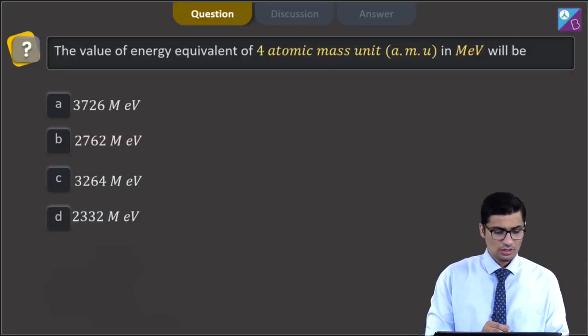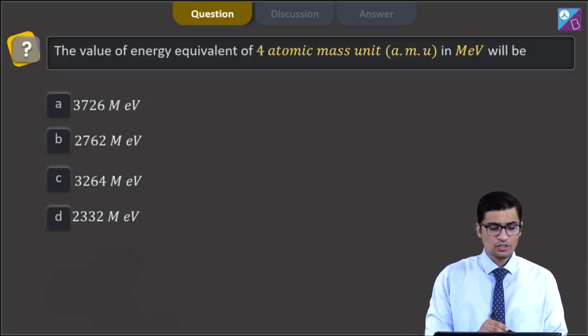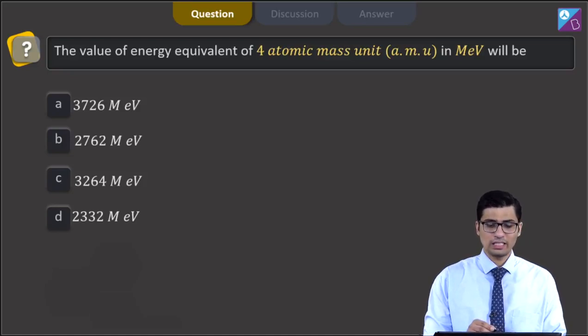Question 11. The question says the value of energy equivalent to 4 atomic mass units, that is AMU, in mega electron volts will be.